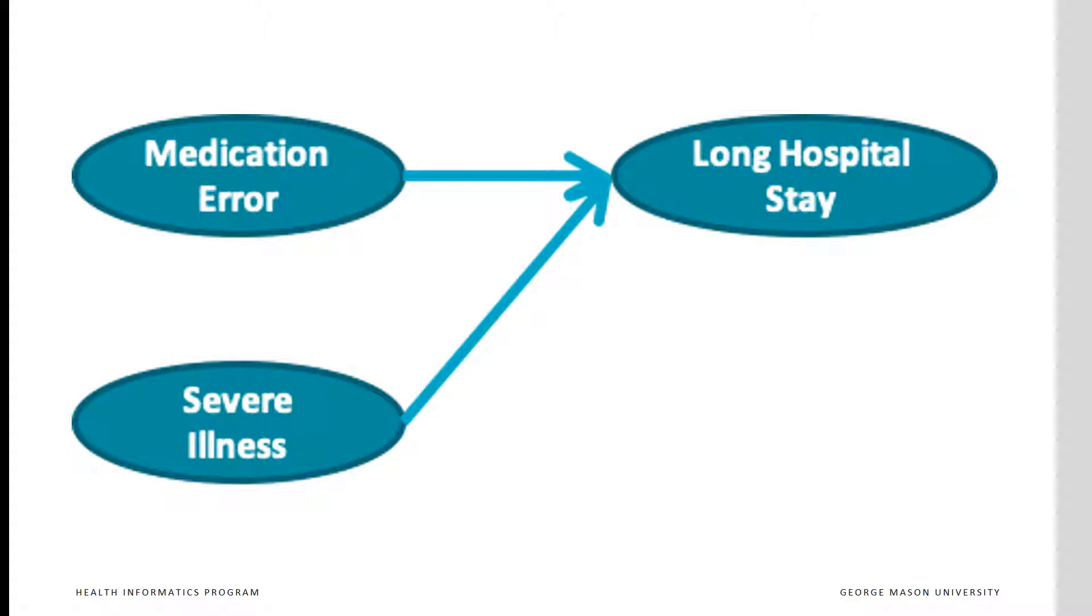Here we are showing two competing causes of long hospital stays. Patients may stay longer in the hospital because they had a medication error, or they are sicker than the average hospitalized patient. There are two causes for the same effect, and this situation is referred to as common effect. Some refer to it as the V relationship among three variables.